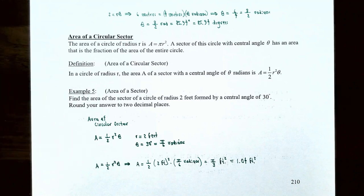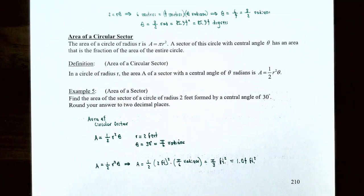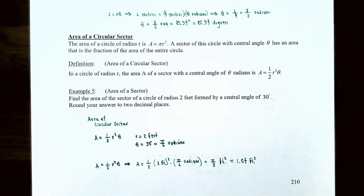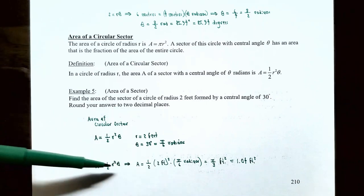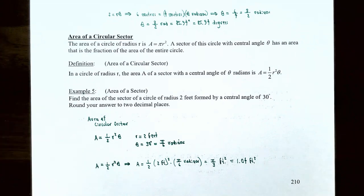Example five: find the area of a sector of a circle with radius 2 feet formed by a central angle of 30 degrees, rounded to two decimal places. First convert 30 degrees to radians: theta equals pi over 6. Then the area A equals one half times r squared times theta equals one half times 4 times pi over 6 equals pi over 3, which is approximately 1.04 square feet.